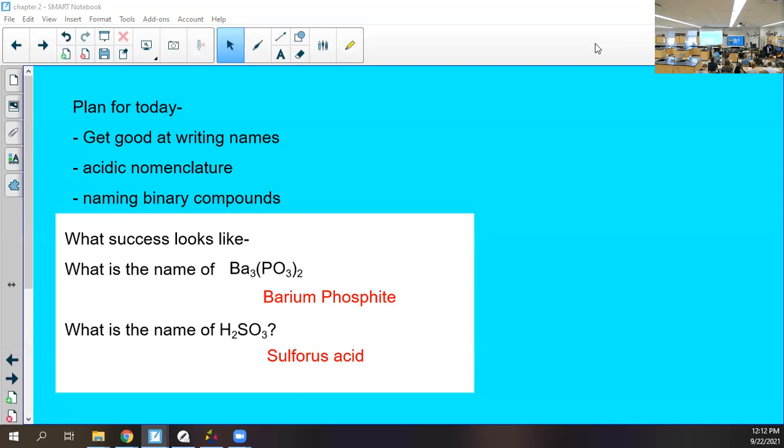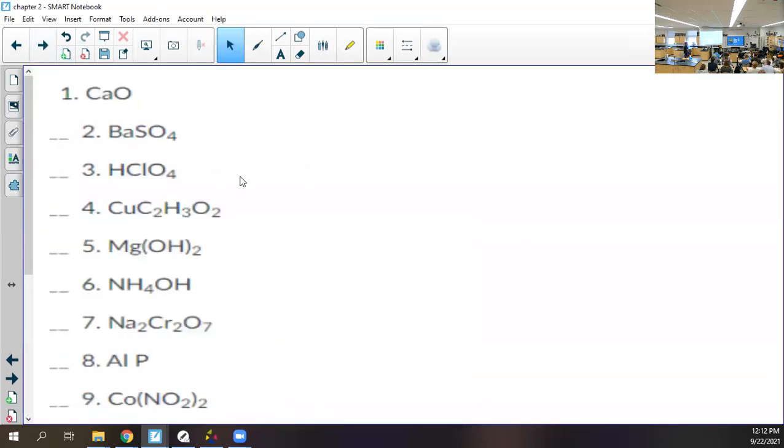Then acidic nomenclature that can get kind of confusing. And then naming binary compounds, they're the easiest by a mile, in my opinion. That's what carbon dioxide is. One carbon, two oxygens, and we're ready to roll. This is what success looks like.